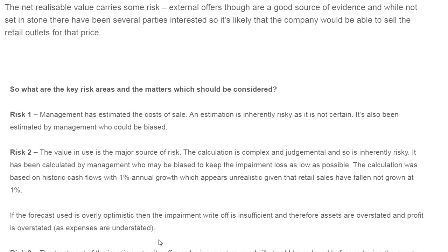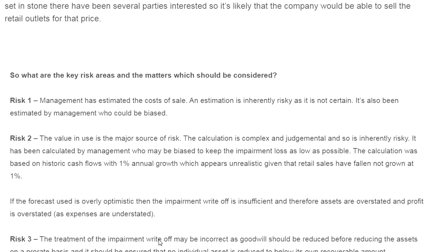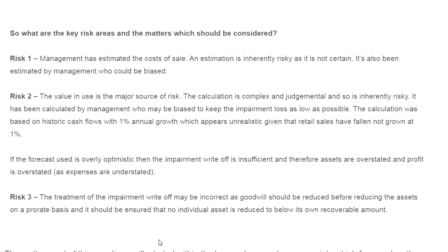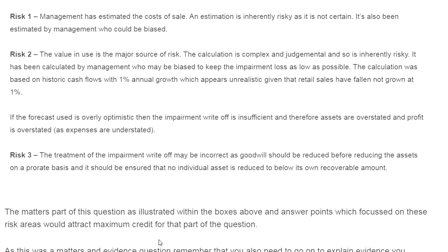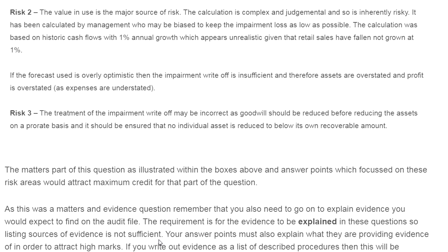Estimates are based on judgmental factors and humans are prone to error, so estimates are inherently risky and can be biased. Management may wish to keep the impairment loss as low as possible. The value in use is a major source of risk because the calculation is complex and inherently risky. It has been calculated by management who may be biased.